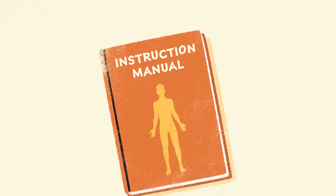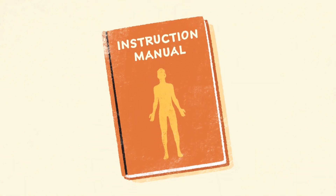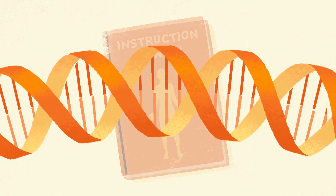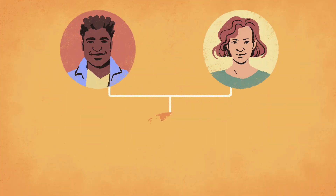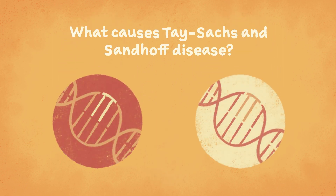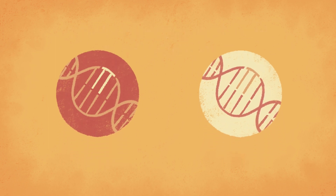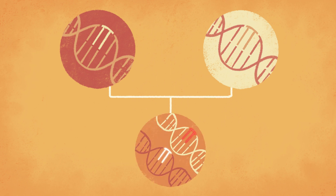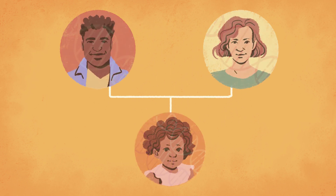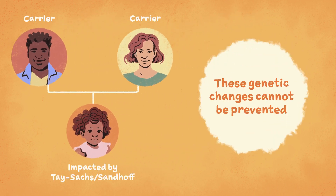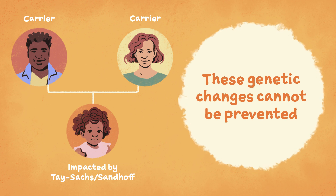Everyone has an instruction manual needed for their body to work. These instructions are known as genes and are passed on from parents to child. Tay-Sachs and Sandhoff disease are caused when a child has been passed on two copies of a certain gene that has changes or mutations — one copy from each parent. Parents can be carriers for these mutated genes without being affected by the disease. These genetic changes are not something that can be prevented.